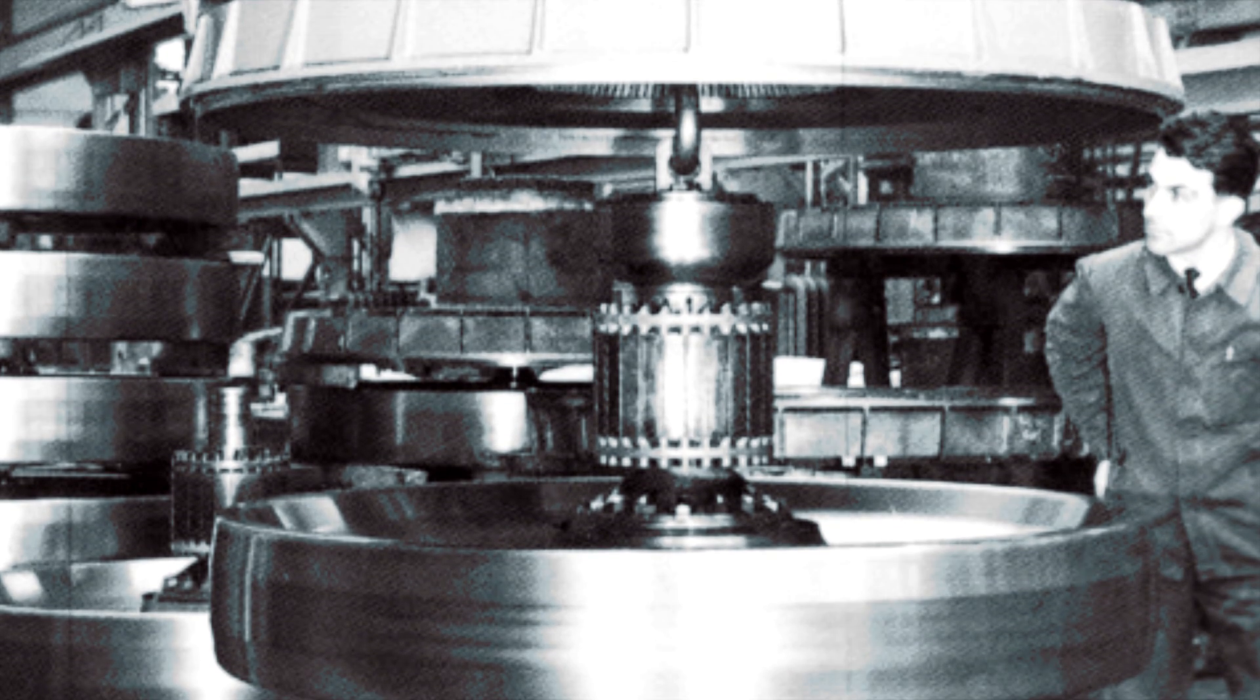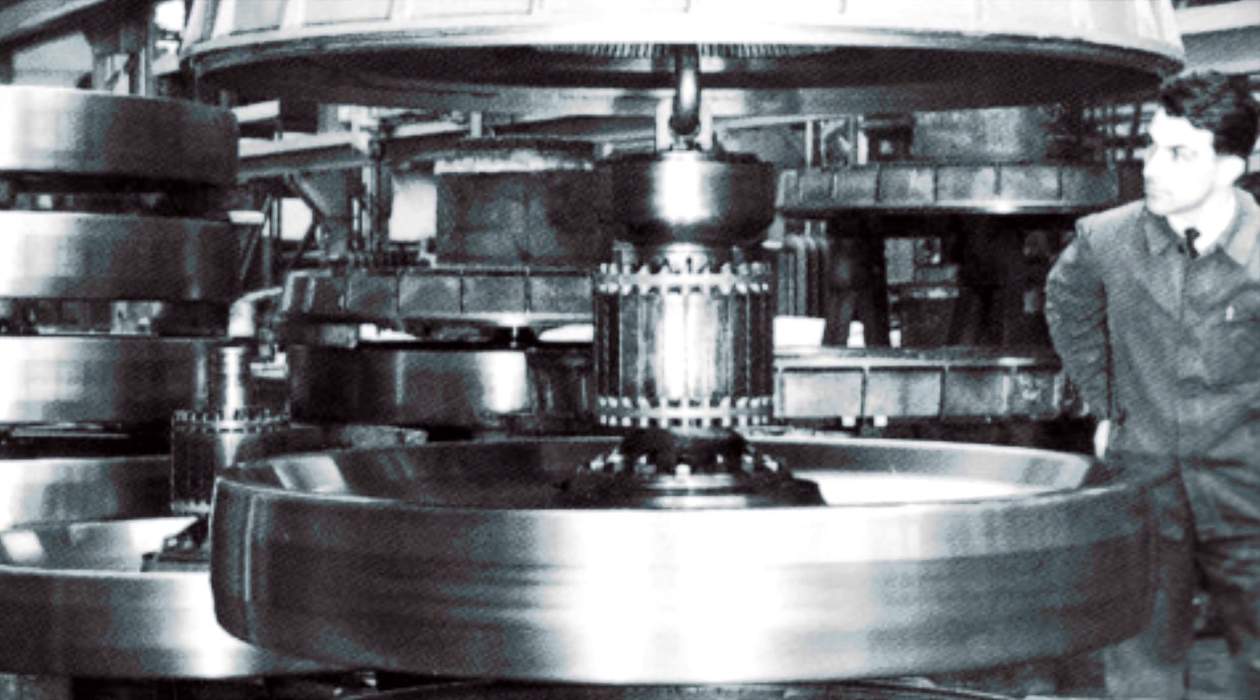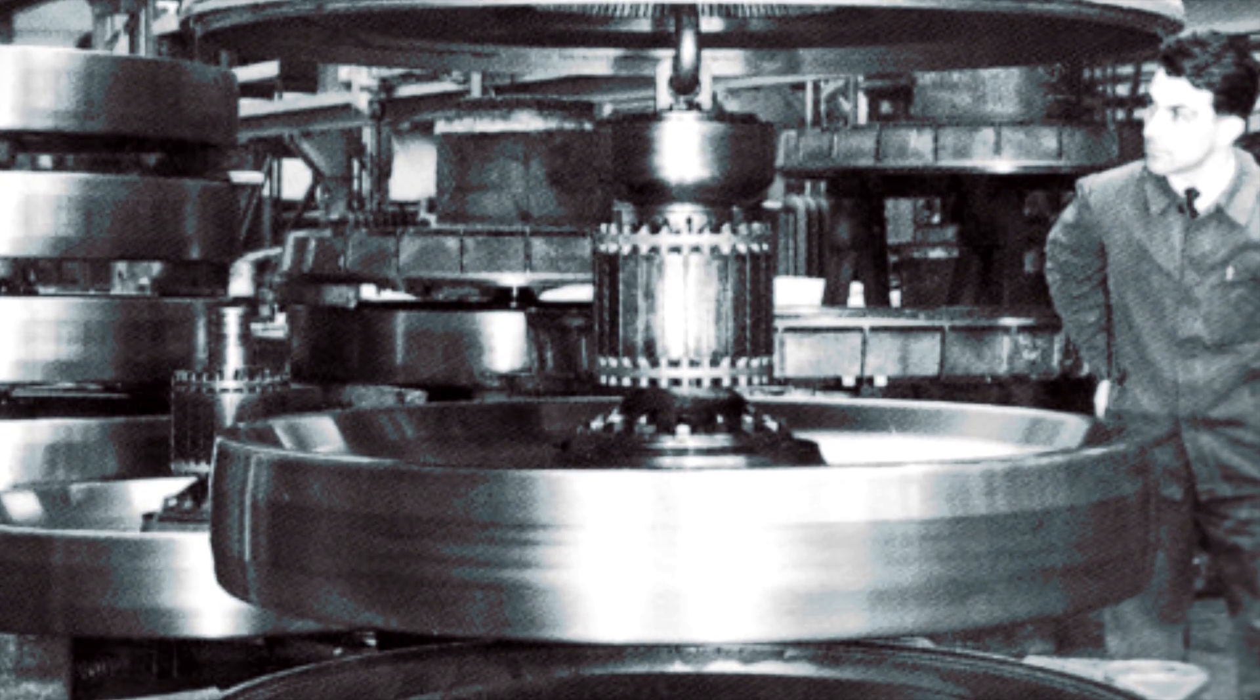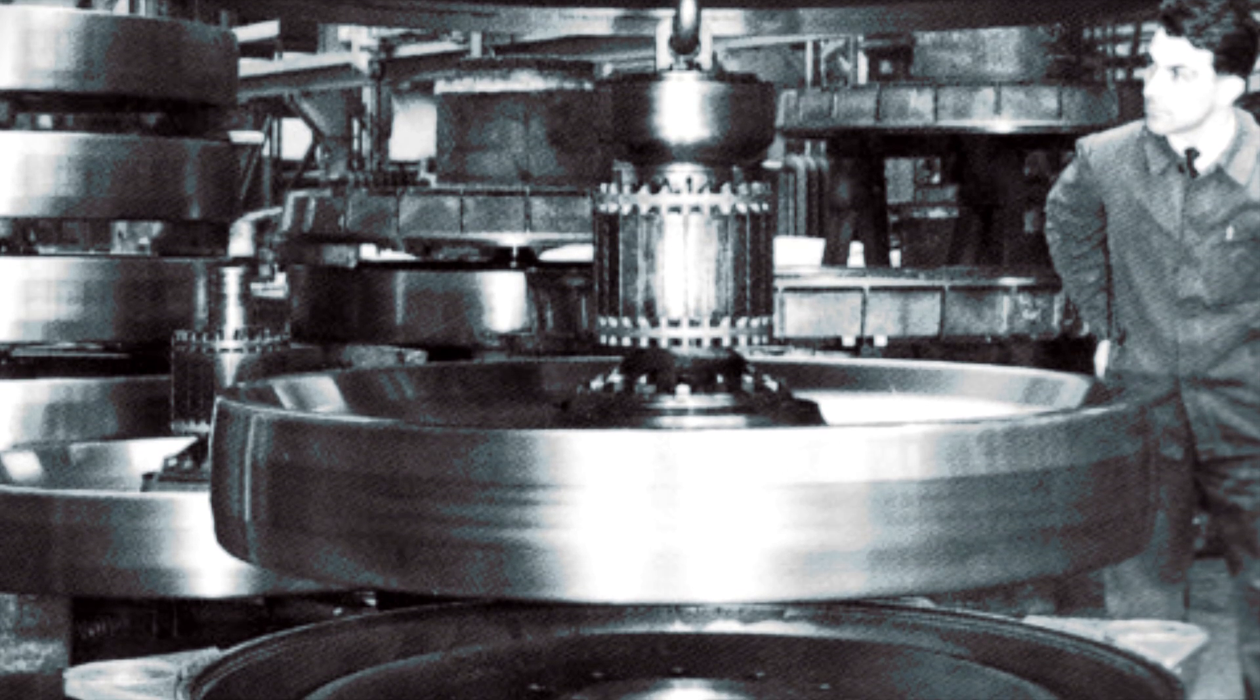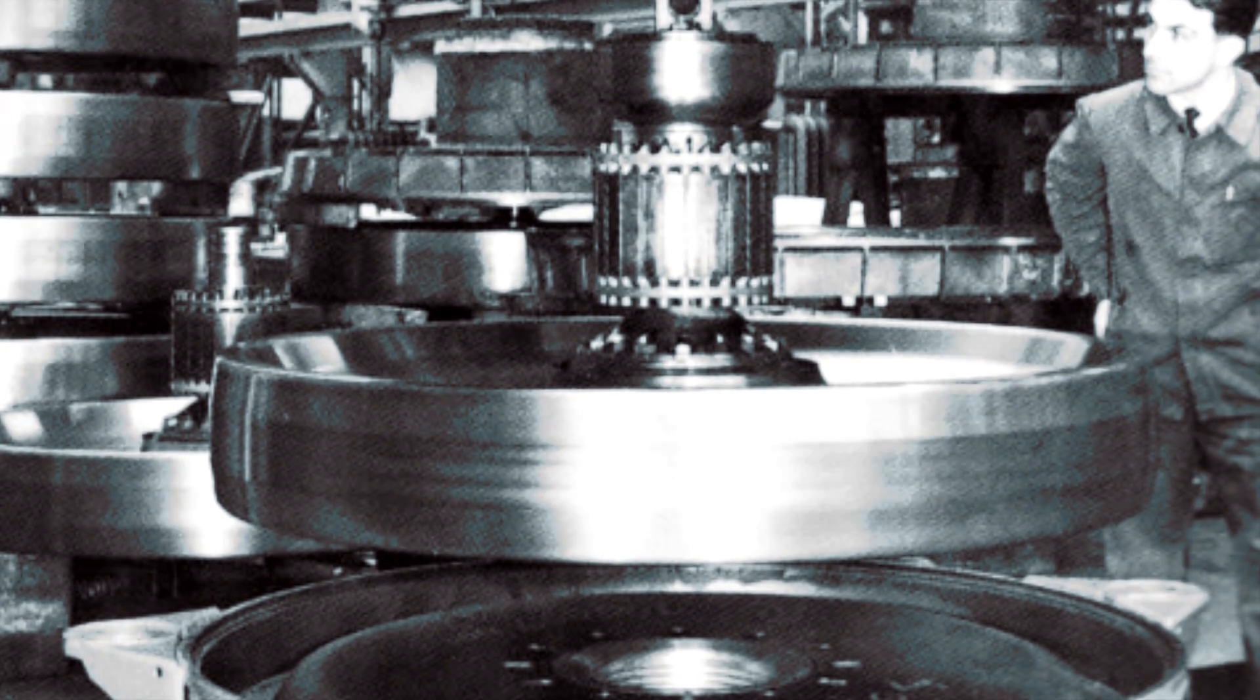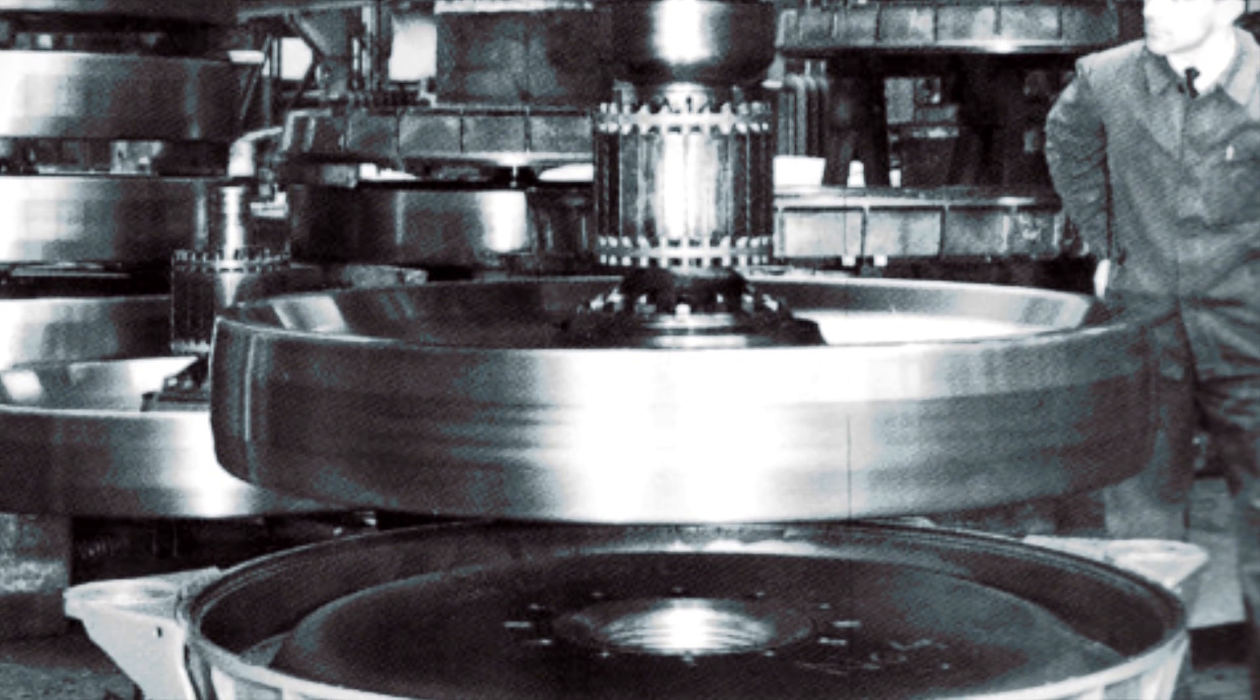What made the gyrobus so unique was that instead of traditional chemical batteries or an internal combustion engine, it was powered by a large 1,500-kilogram flywheel sealed in a low-resistance hydrogen-filled chamber that spun at up to 3,000 RPM.